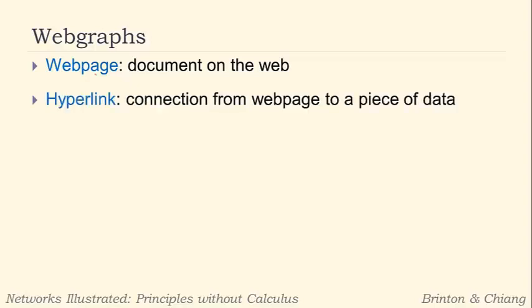A hyperlink is a connection from a web page to a piece of data. So on the web pages themselves, you see some external links here that you can click on. And when you click on them, they'll bring you somewhere else. Now, typically it'll bring you to another web page. So for our purposes here, a hyperlink is a connection from a web page to another web page.